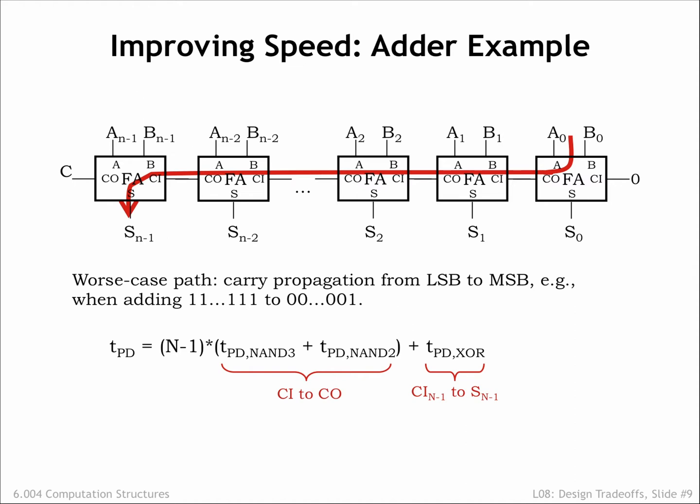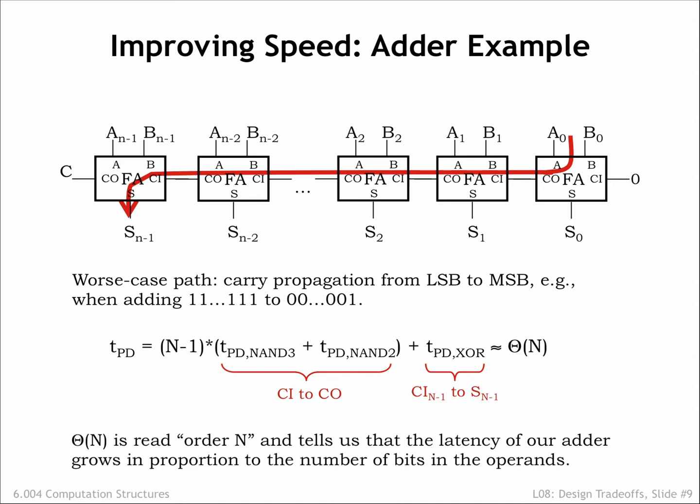It's useful to summarize the dependency of the latency on n using the order of notation to give us the big picture. Clearly as n gets larger, the delay of the XOR gate at the end becomes less significant, so the order of notation ignores terms that are relatively less important as n grows.